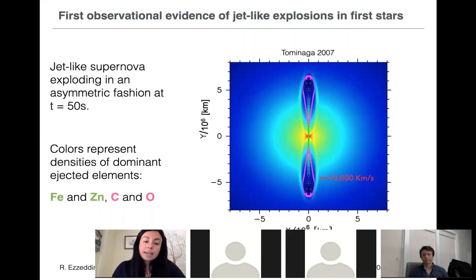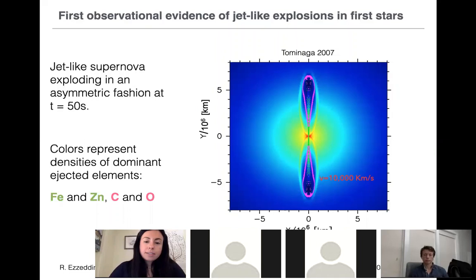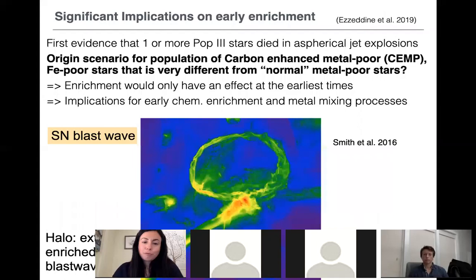The model we used is a 2D model by Nozawa Tominaga and Kenichi Nomoto from Japan, who simulated this jet-like supernova explosion. Unfortunately, there are no currently successful 3D models for a first-star progenitor, but many people are working on this. I show how zinc ejection along the poles takes place in order to enrich the gas from which we believe our star HE 1327 must have formed.